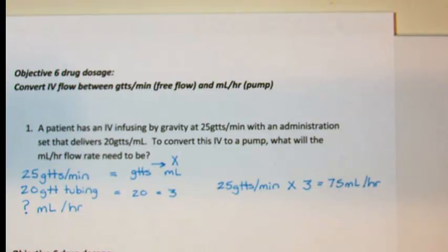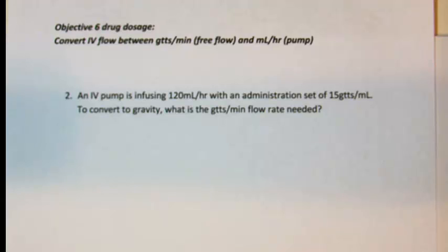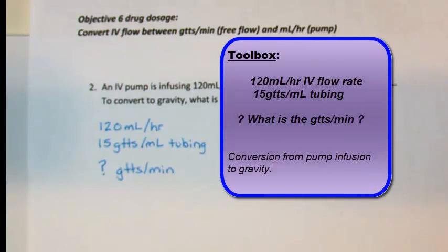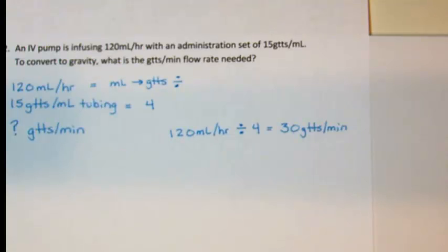With this next question, an IV pump is infusing at 120 milliliters per hour with an administration set of 15 drops per milliliter. To convert to gravity, what is the drop per minute flow rate needed? The toolbox shows 120 milliliters per hour as the flow rate, tubing of 15 drop per milliliter, and a question of converting to gravity is what is the drop per minute flow rate.